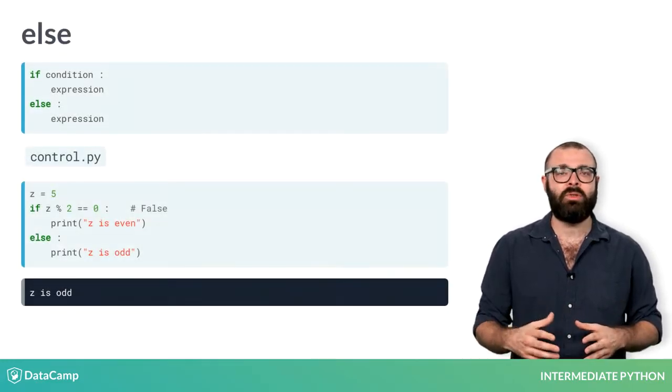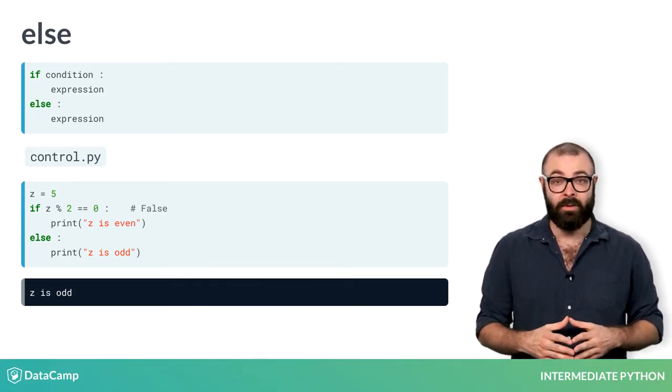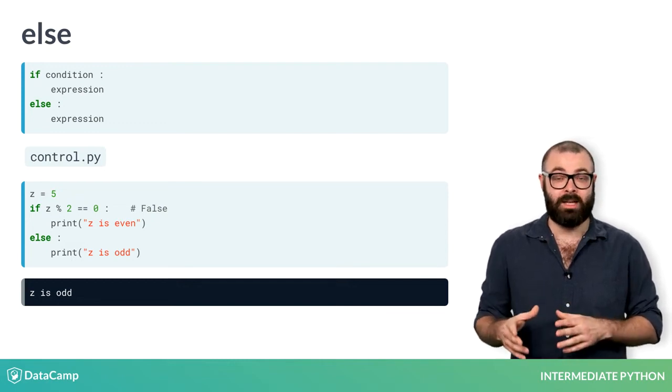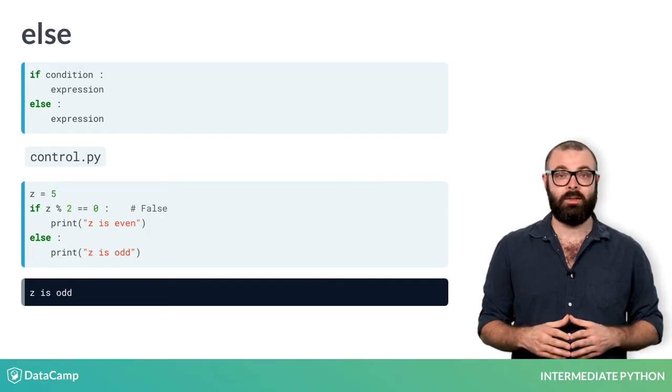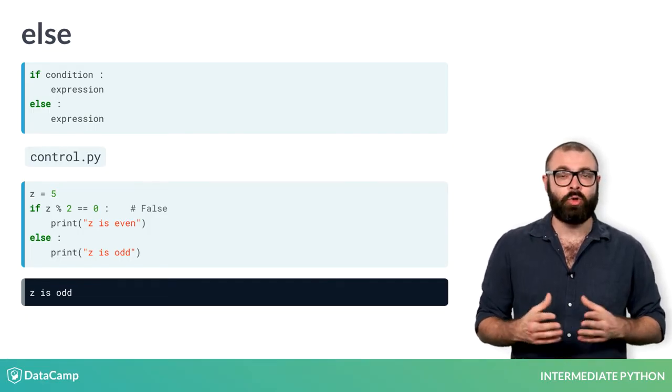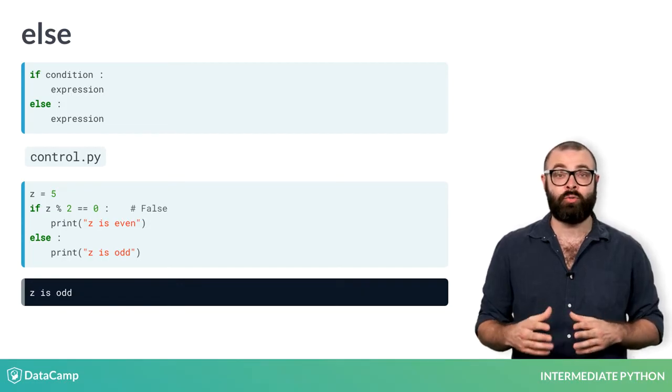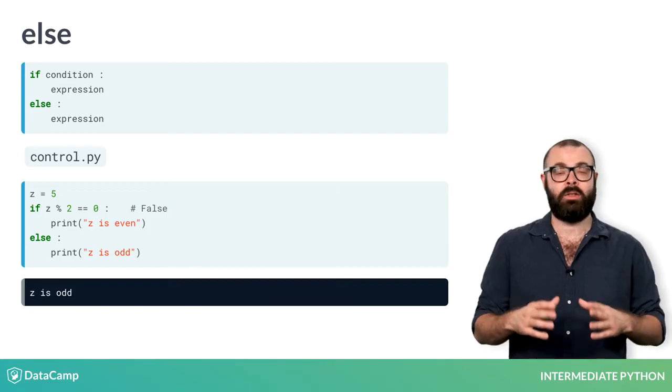Well, you can simply use an else statement like this. If we run it with z equals to 5, the condition is not true, so the expression for the else statement gets printed out. The general recipe looks like this. For the else statement, you don't need to specify a condition. The corresponding expression gets run if the condition of the if statement it belongs to does not hold.